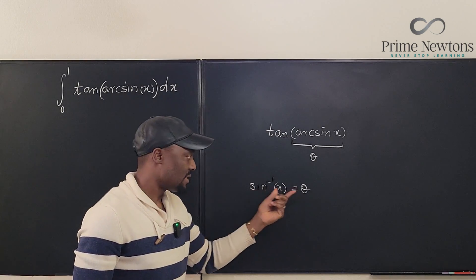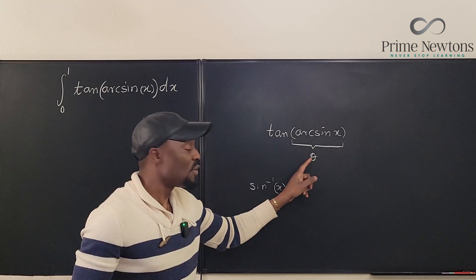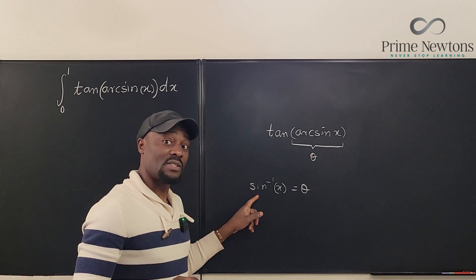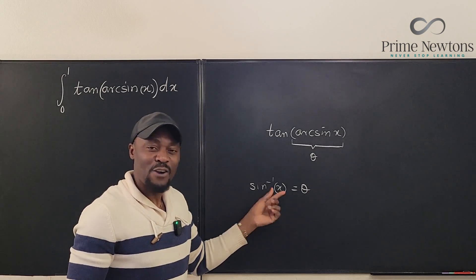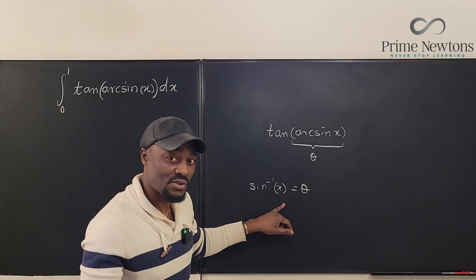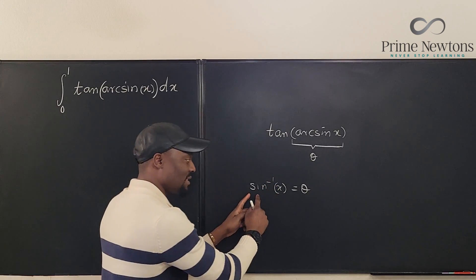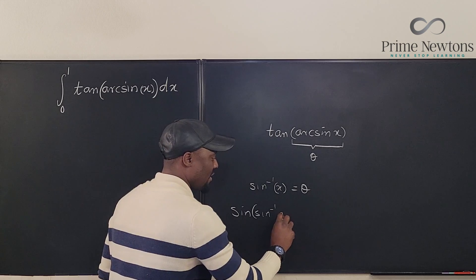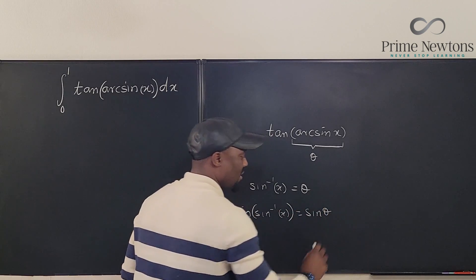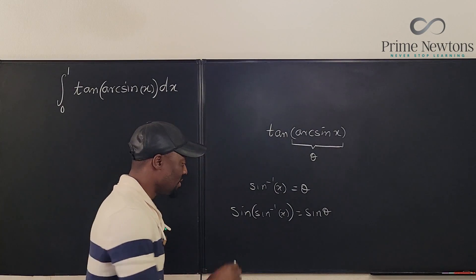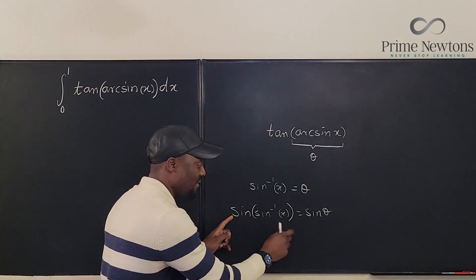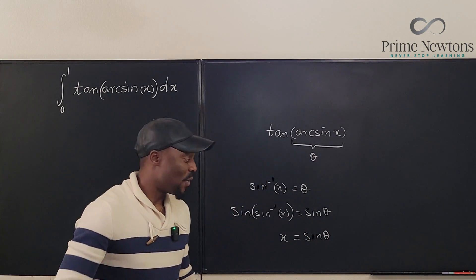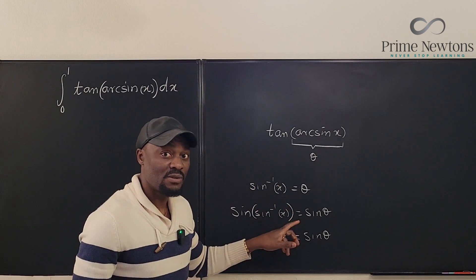What we want is to write theta in terms of x, not in terms of arc sine. To free the argument of a trig function, you take the inverse of that trig function. So because this is the inverse trig, we're going to take the sine of both sides: sine of inverse sine of x equals sine of theta. Inverse functions undo each other, so that frees x, giving us sine theta equals x.